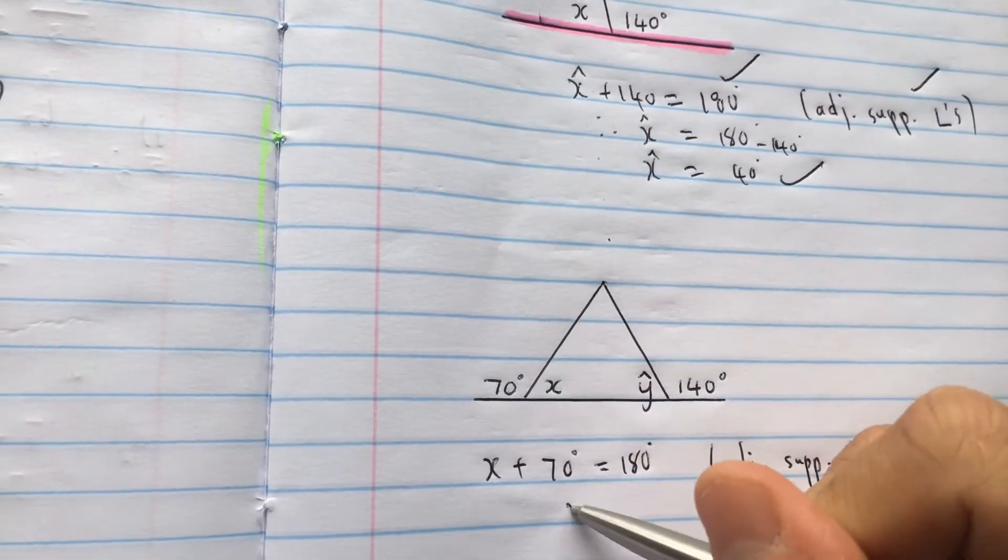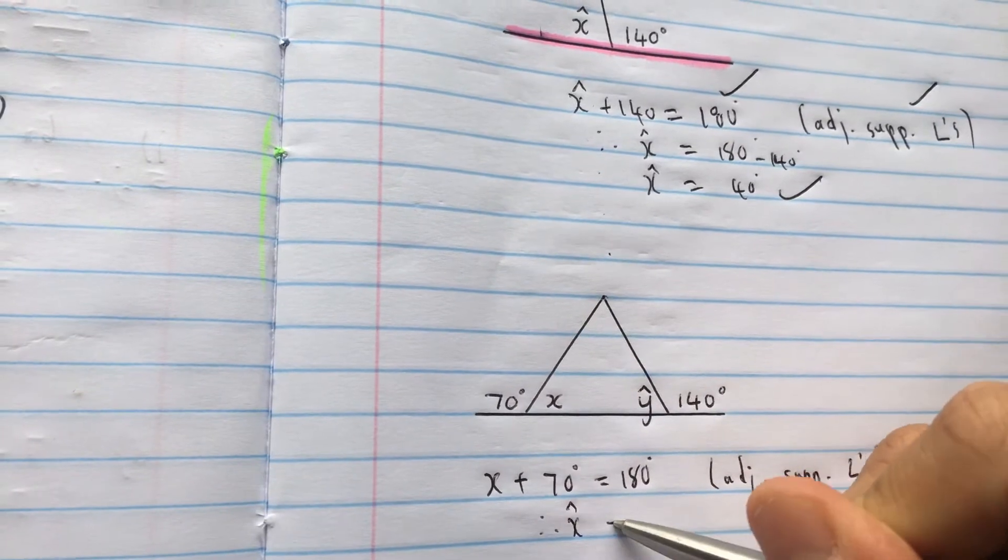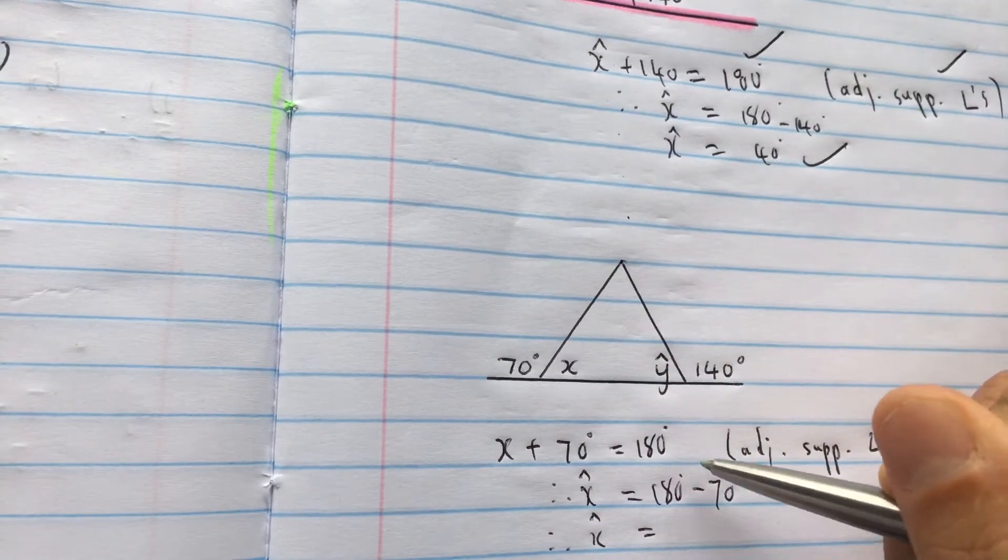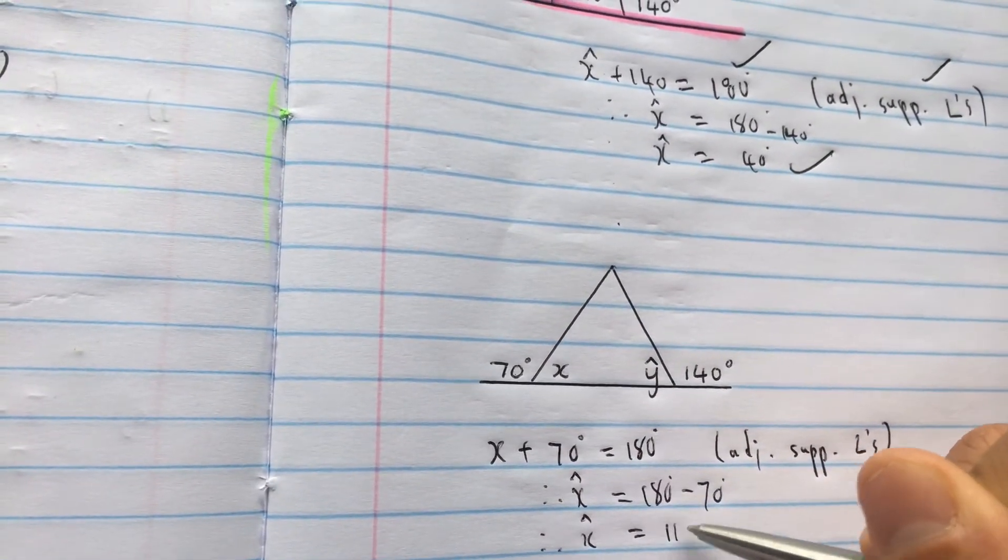Adjacent supplementary angles. Take the 70 across. 180 degrees minus 70. Angle x is equal to 110 degrees.